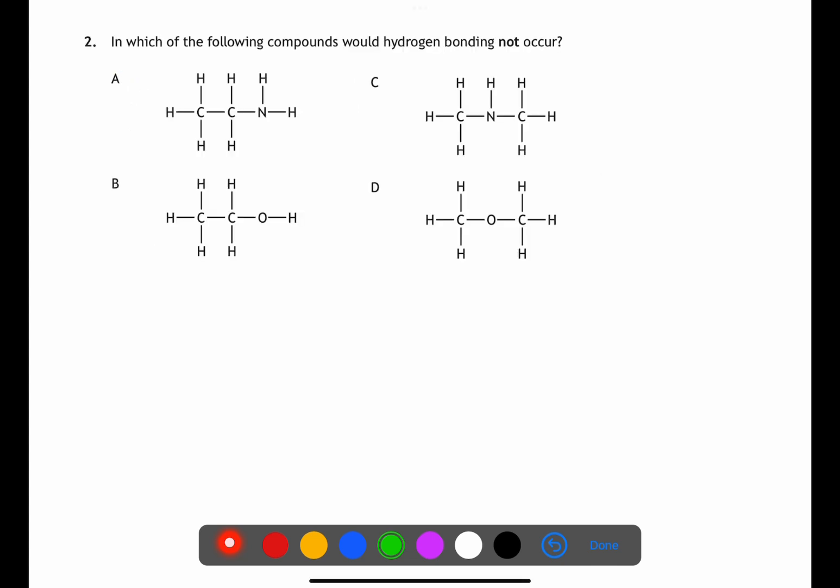For question two we're looking for which of these compounds would not have hydrogen bonding. For hydrogen bonding to occur you need to have an OH, NH or HF bond. We need to look at these compounds and see which of them does not have one of these bonds. D is an ether and does not have an OH bond.